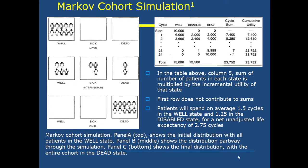In a Markov cohort simulation, columns include the number of patients in each state at each cycle. Patients will spend on average 1.5 cycles in the well state and 1.25 cycles in the disabled state, for a net unadjusted life expectancy of 2.75 cycles.